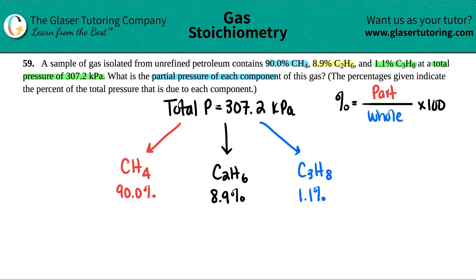Now, the whole here would be the whole pressure of the gas, the total pressure. So maybe I'll just erase the whole, and I'll put the total pressure, so I'll put pressure total. And the part is the individual pressures of the compounds that are in the gas. So I'll just put P compound. So it's the pressure of the specific compounds divided by the pressure total.